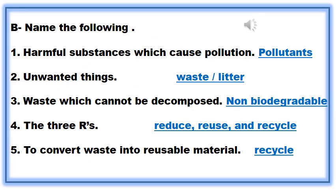Now move on to exercise B on page number 110: name the following, read these sentences carefully and give one-word answers. Harmful substances which cause pollution — answer: pollutants. Number two: unwanted things, waste or litter which cannot be decomposed — answer: non-biodegradable. Number four: the three R's — reduce, reuse, and recycle. Number five: to convert waste into reusable material — answer: recycle.